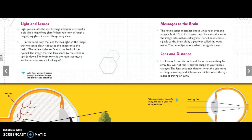The retina is the surface at the back of the eyeball. The image that the lens sends to the retina is upside down. The brain turns it the right way up so we know what we are looking at.